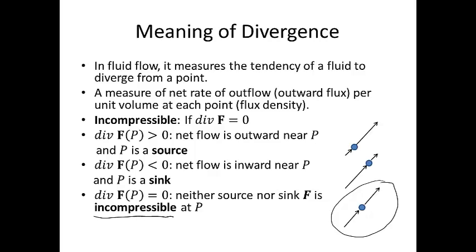The net rate of outflow would be zero at that point. If the divergence of F at a point is greater than zero, net flow is outward near P and P is called a source — the vectors going into the point are smaller than the vectors coming out. If the divergence of F at a point P is less than zero, net flow is inward near P and P is called a sink, so the vectors going in are bigger than the vectors going out.